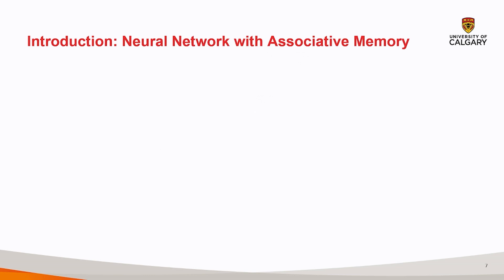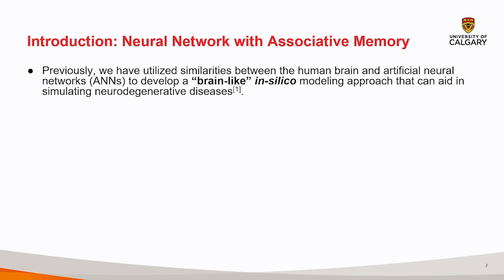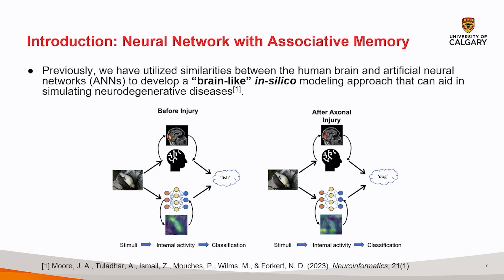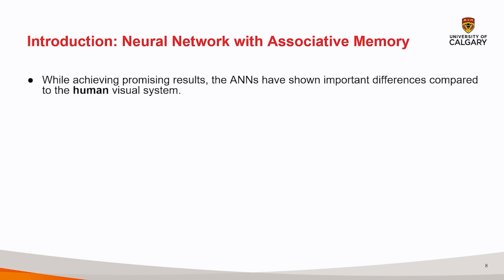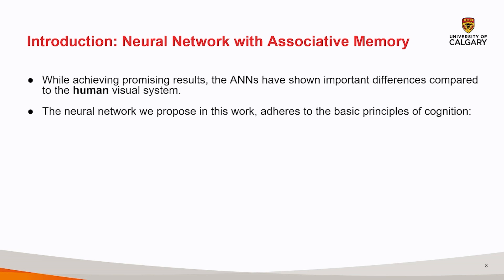This is where in-silico modeling comes in. In recent years, the emergence of the intersection of neuroscience and AI has opened new ways of understanding the brain. In our previous work, we utilized similarities between the human brain and artificial neural networks to develop a brain-like in-silico modeling approach that can aid in simulating dementia. While achieving promising results, the ANNs have shown some important differences compared to the human visual system. The neural network we propose addresses some of these deficits and adheres to the basic principles of vision and learning: perception, encoding, and memory recall.